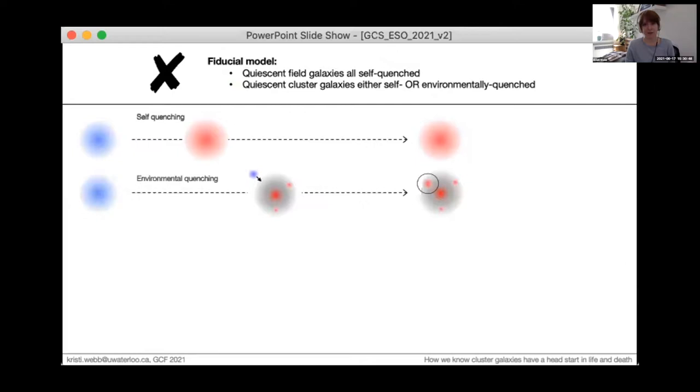The point to get across is that self-quenching generally occurs earlier in cosmic time as it broadly traces the efficiency of star formation. While environmental quenching, which here we mean any quenching process related to galaxies' interaction within a larger halo after being accreted, this effect dominates at later times since it takes time for those clusters to build up.